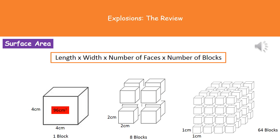If we cut that block into eight blocks with two centimeter sides, the surface area is 192 centimeters squared. Again, if we cut it into 64 blocks each with one centimeter edges, the total surface area is 384 centimeters squared. So what we can see is the more we cut up a block, the larger the surface area is.